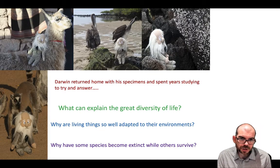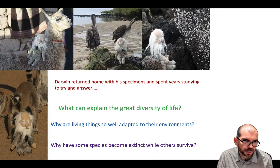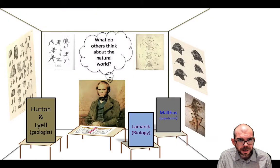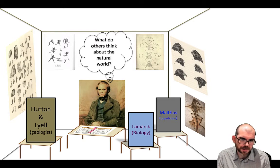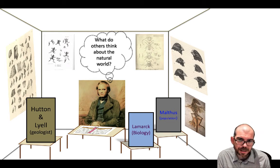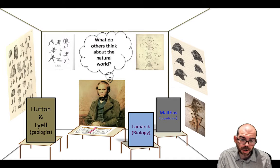At the end of his voyage, Darwin returned with all the artifacts and observations he made, determined to answer: what can explain the diversity of life, why are living things so well adapted to their environment, and why have some species become extinct when others survive? Science is never done in a vacuum. It's important to understand three large ideas from two scientists and a social scientist that influenced Darwin's work during this time.